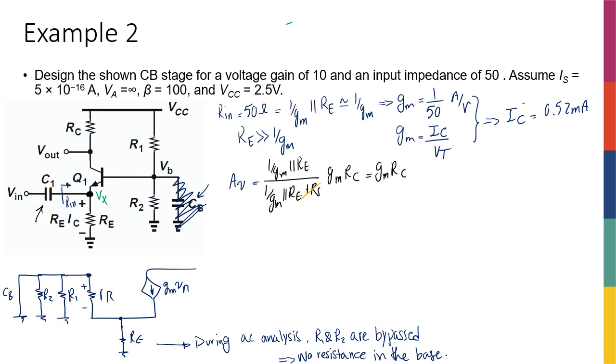Now let's go back to this. Now that I know gain is GM RC and I want the gain to be 10, because the question is asking me to have that, and I have GM to be 1 over 50, therefore that gives me RC to be 500 ohms.